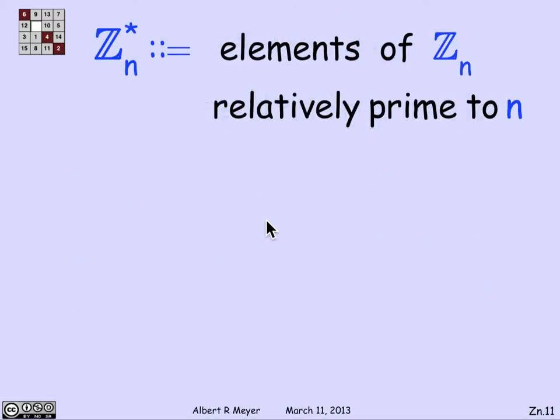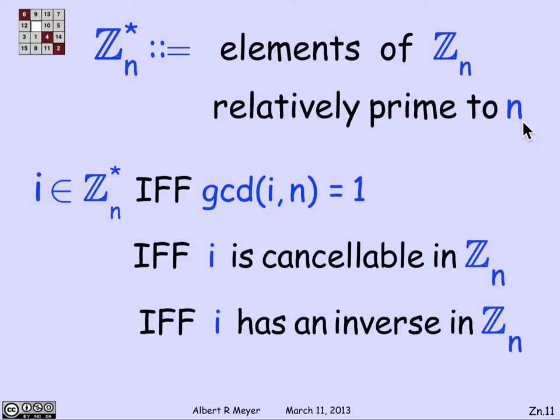Now, the rules that we already figured out for when you can cancel in congruence translate directly over to when you can cancel in Z_n. And now there's a standard abbreviation that's useful to use here. If I write Z_n star, what I mean is the elements in Z_n that are relatively prime to n, the elements whose GCD with n is 1. So what we have is the following equivalent formulations of Z_n star, which correspond to the facts we've already figured out about congruence, namely an integer i in the range from 0 to n is in Z_n star if and only if the GCD of i and n is 1, or i is cancelable in Z_n, or i has an inverse in Z_n. All of these three things are equivalent.